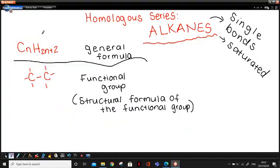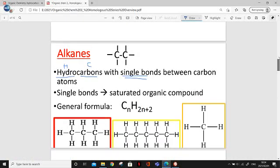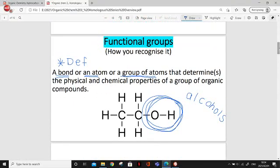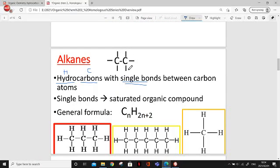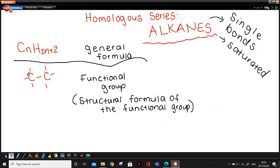Let's start on my whiteboard. So the general formula for an alkane is CnH2n plus 2. You need to know that. They can ask you that in multiple choice or in a longer question. Then the functional group. Remember from last lesson, the functional group is how do we recognize this compound? The definition is it's a bond or an atom or a group of atoms that determine the physical and chemical properties of a group of organic compounds.